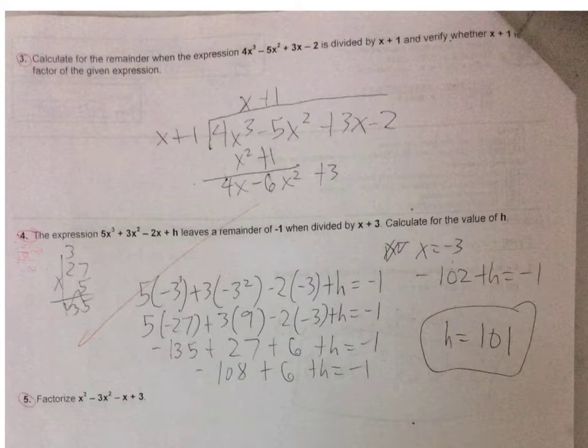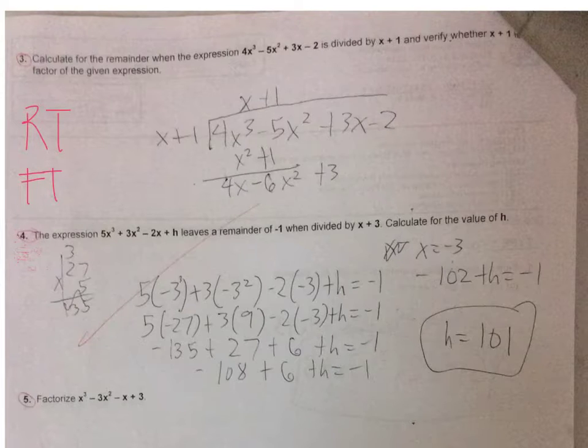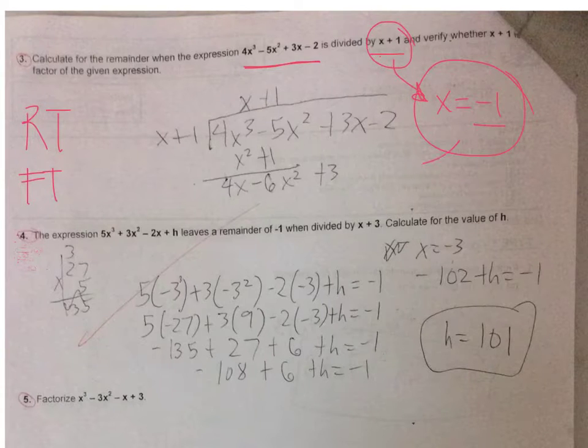We learned two important theorems: the remainder theorem and the factor theorem. The remainder theorem says if you're dividing a polynomial by a binomial, what you can do is place the number that makes the binomial zero—in this case x = -1. When you place -1 into every x in the polynomial, you will be getting the remainder. You don't actually have to use long division, although that is okay, but this is a long process. We have introduced a shorter way of finding the remainder.